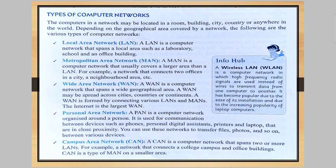Next is Wide Area Network, or WAN. A WAN is a computer network that spans a wide geographical area. A WAN may be spread across cities, countries, and continents. A WAN is formed by connecting various LANs and MANs. The internet is the largest WAN.